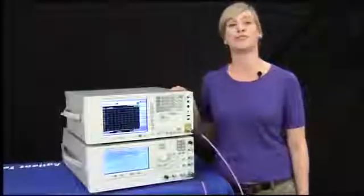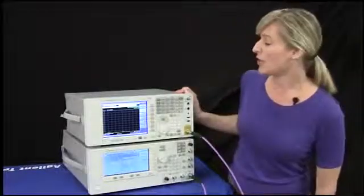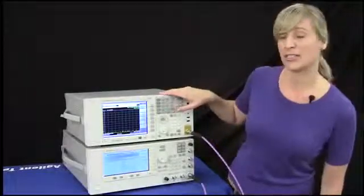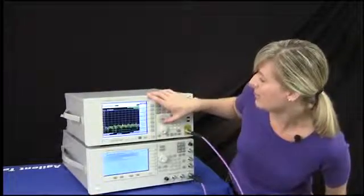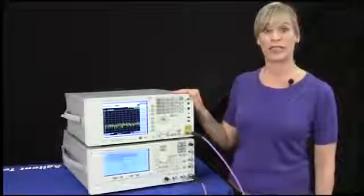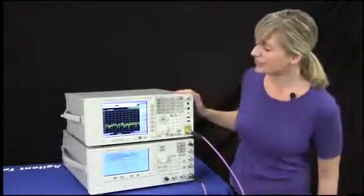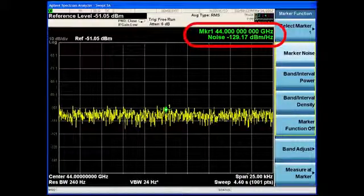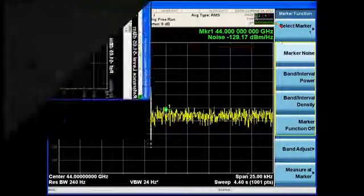I will now turn the RF off and we'll take a look at the noise floor performance of the EXA at 44 GHz. I'll adjust the reference of our signal so that we can see it on the screen. And I'll place a noise marker at 44 GHz. As you can see, our noise floor performance is approximately negative 129 dBm per Hz.